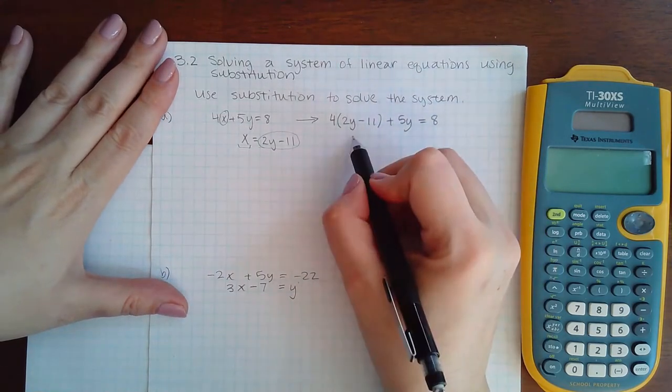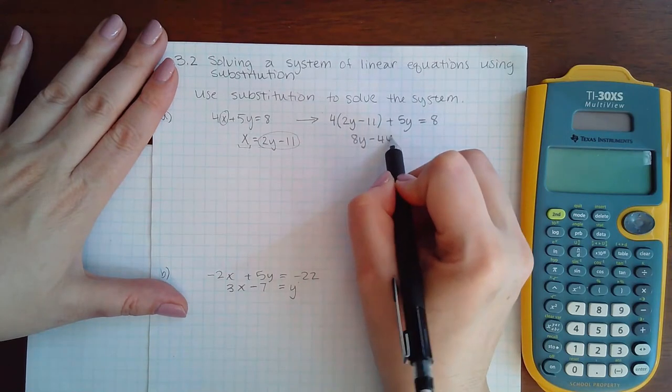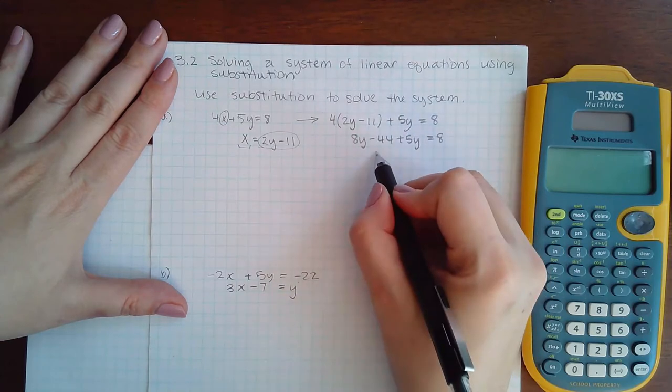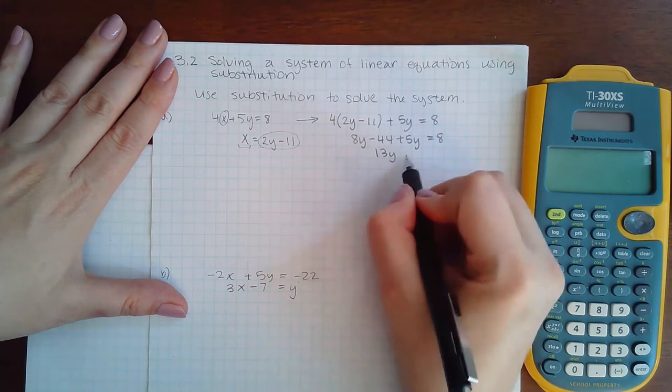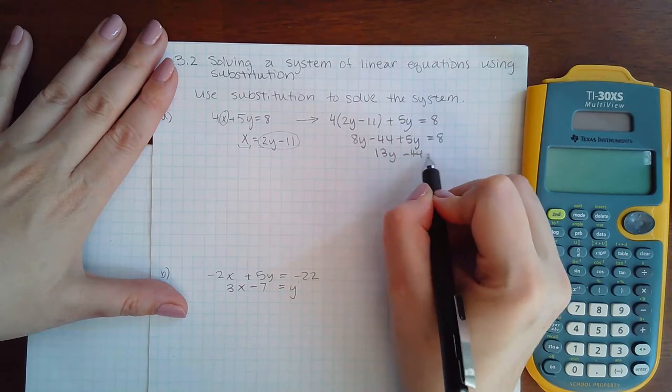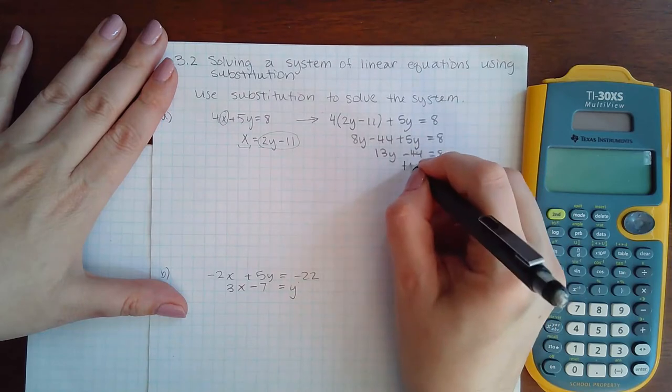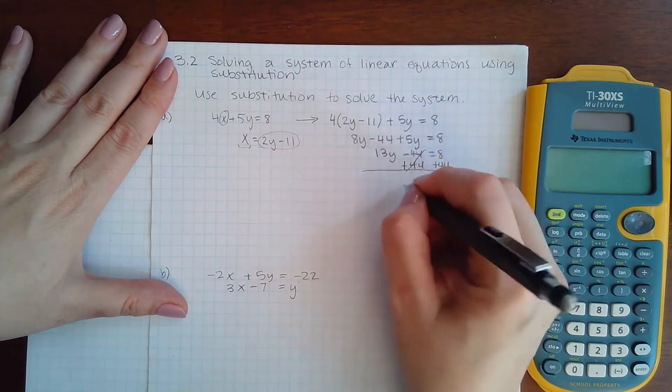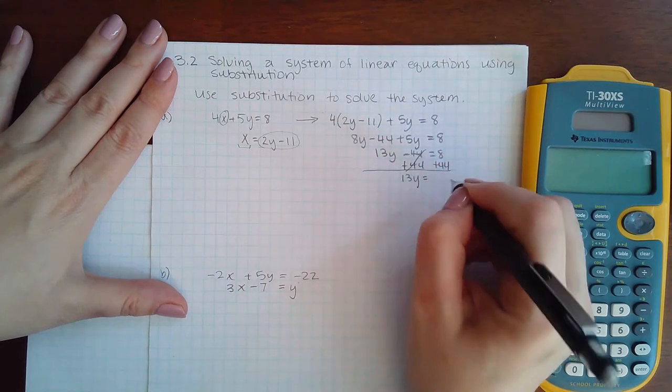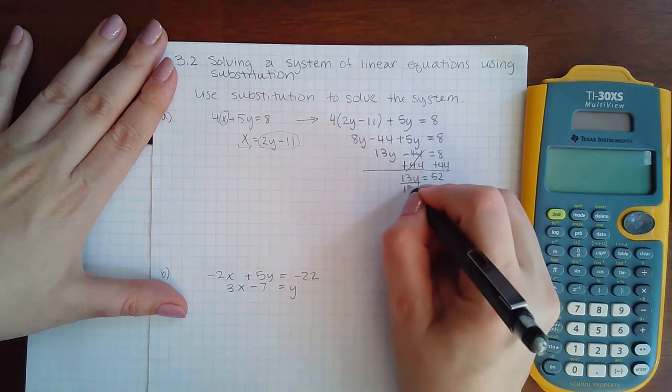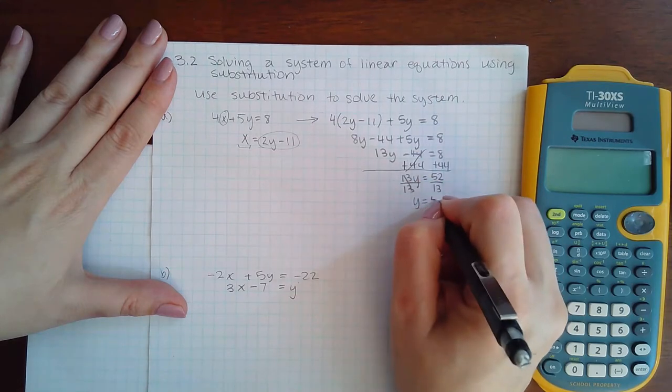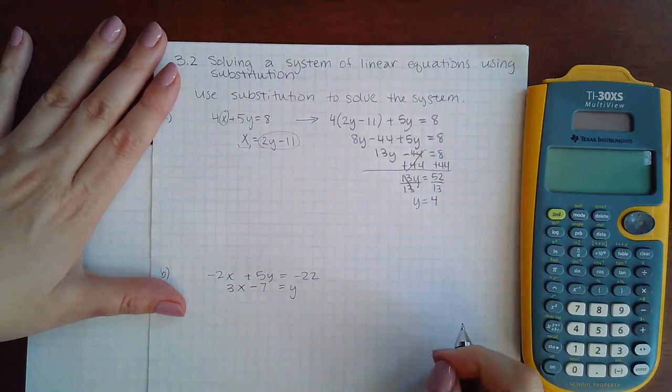And then if I distribute my 4 and combine my like terms and then add 44 to both sides and then divide by 13, I get y equals 4.